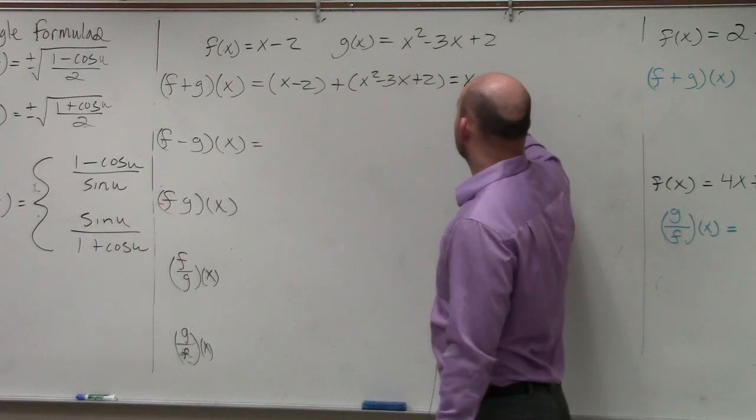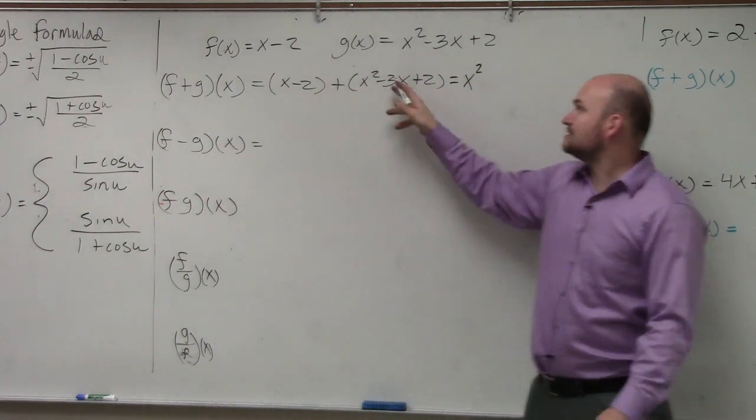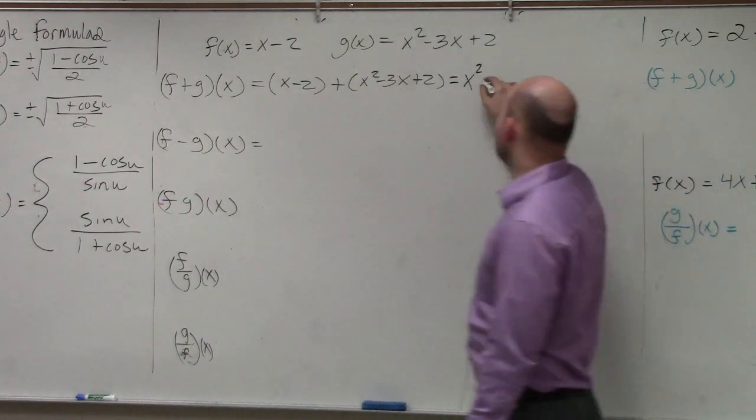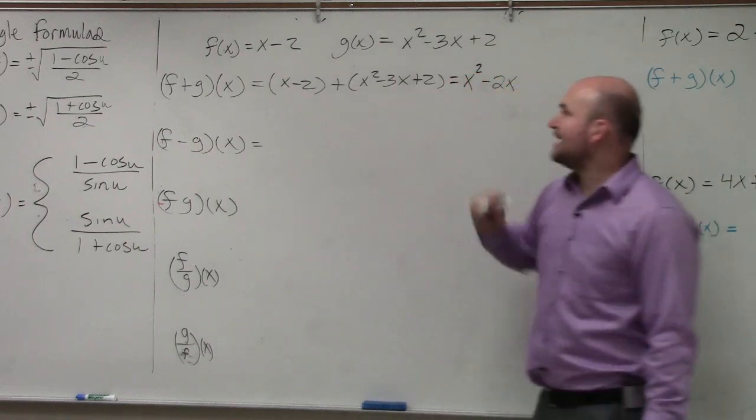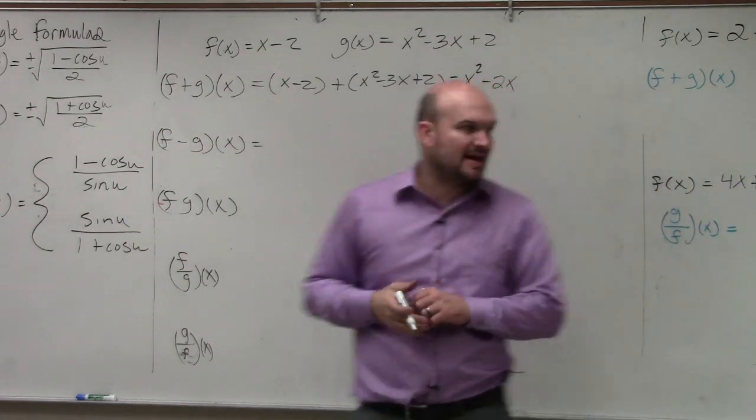I can't combine anything with x squared. Then I have x plus a negative 3x is a negative 2x. And then I have negative 2 plus 2 is just 0, so I'm going to leave that out.